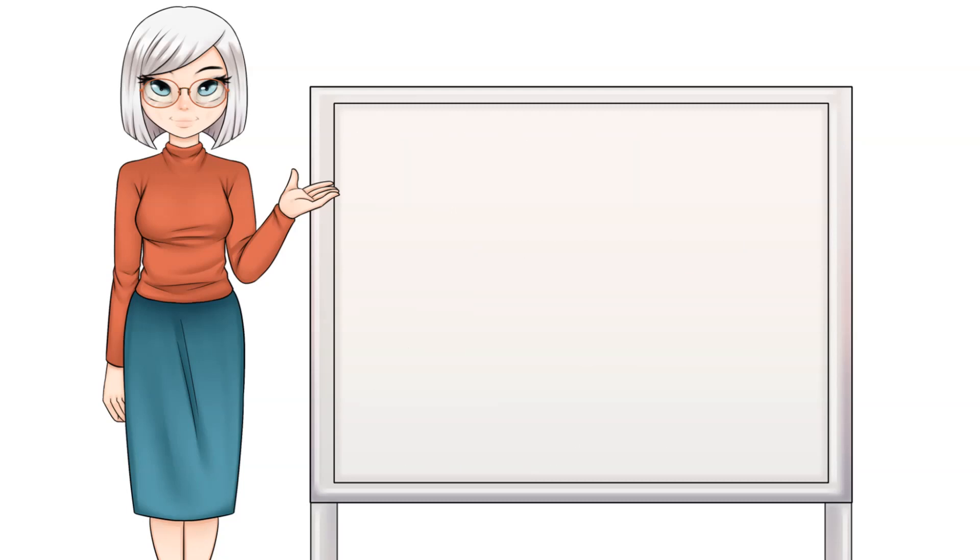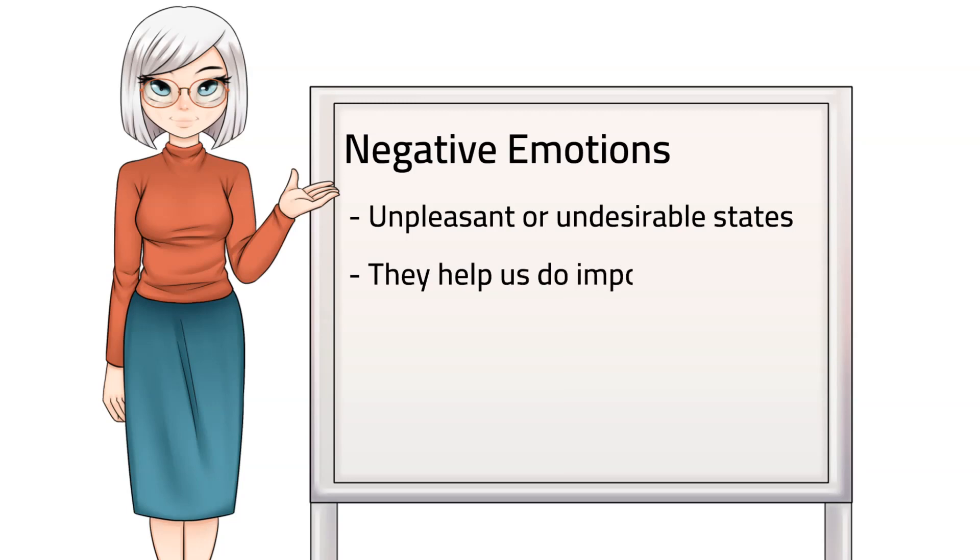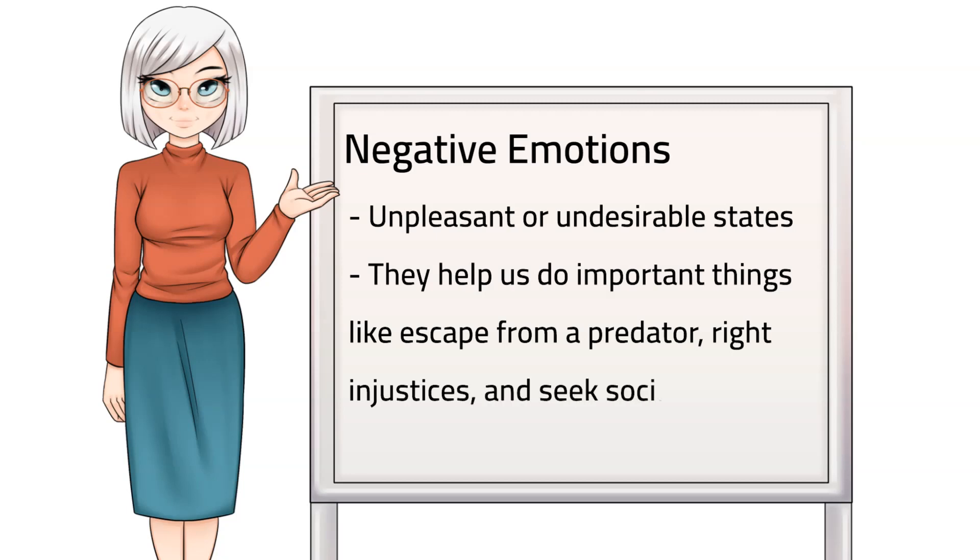When we think about emotion, we often focus mostly on negative emotions, which are unpleasant or undesirable states. Even though we may not like negative emotions, they help us do important things in our lives. For example, fear can help us escape from a predator, anger can help us right injustices, and sadness can help us rest or seek social support.